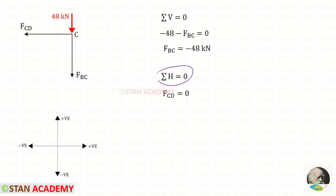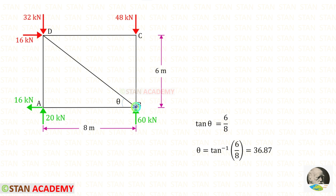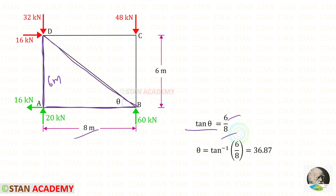Using the horizontal equilibrium rule at joint C we find that Fcd is equal to zero. Now we are going to take joint B and find the member force Fbd. Before that we need to find the angle theta. Taking this triangle and using the tan theta formula — opposite side upon adjacent side — the opposite side is 6 m and the adjacent side is 8 m, so tan θ = 6/8, giving θ = 36.87°.